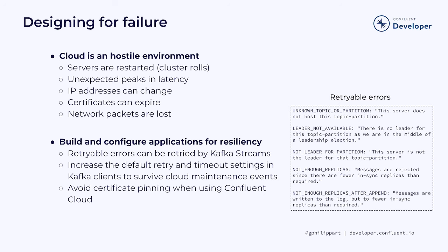First, you should assume that servers will restart. This happens every day in the cloud when clusters are rolled for an upgrade. You can also experience unexpected peaks in latency, IP addresses can change, certificates can expire, and network packets going across the internet are lost more frequently than in most on-premise data centers. The key to surviving those cloud events is to build and configure your streaming applications in a way to handle these kinds of problems gracefully.